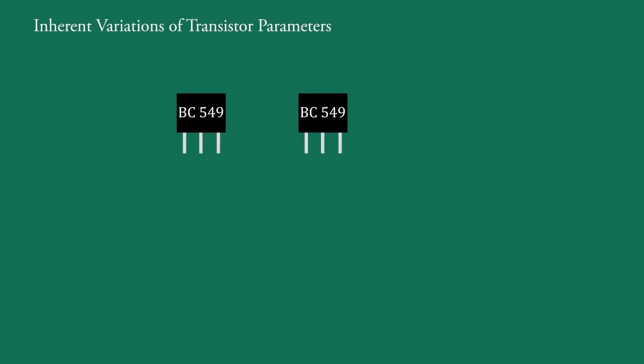For example, BC549 is an NPN transistor. Its parameter β varies from 50 to 500. That is, β for one transistor may be 50 and for another it may be 500, although both are BC549.